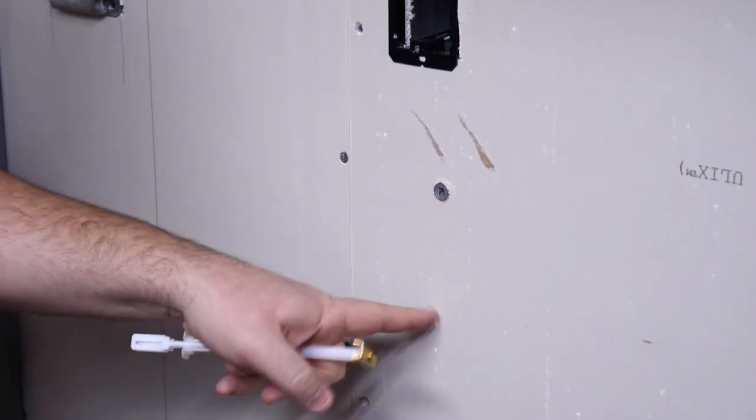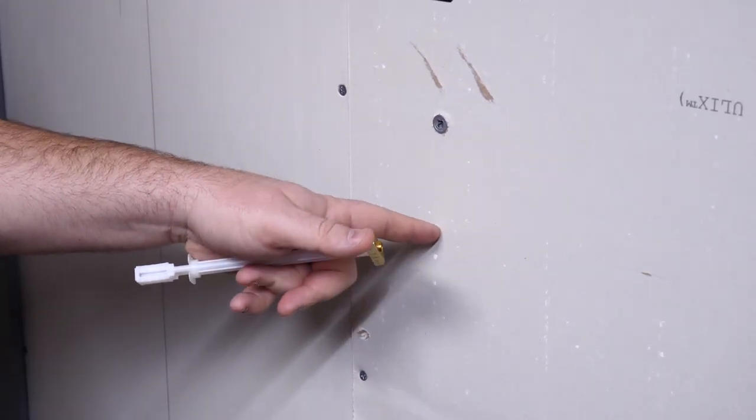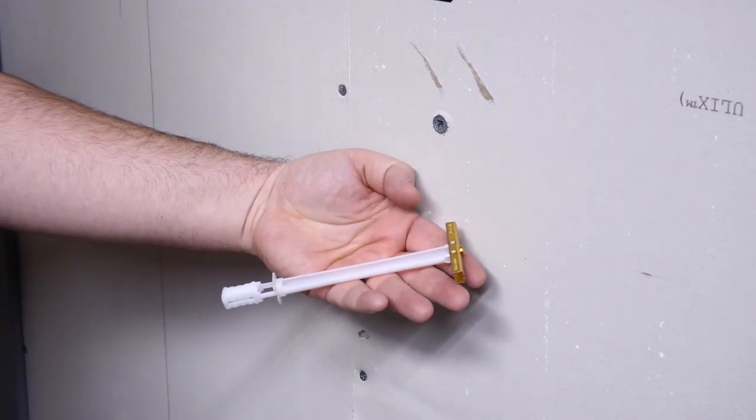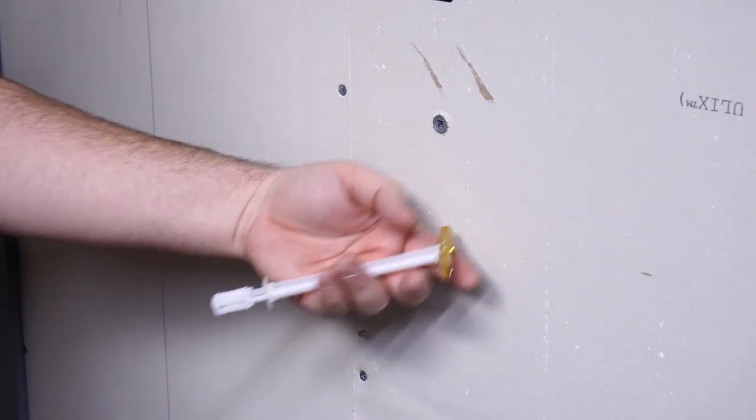When we're getting to heavier devices, such as a display, that's when I go to a snap toggle. The one I have here uses a 1/4-20 bolt and requires a half-inch hole to be drilled. It can withstand over 200 pounds of sheer weight in drywall.